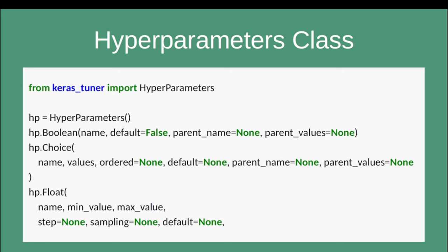There is also float, with which you can define a range of values. You define a min value, a max value, and steps. For instance, if min value is 0, max value is 5, and step is 0.5, the possible values during tuning would be 0, 0.5, 1, 1.5, and so on.